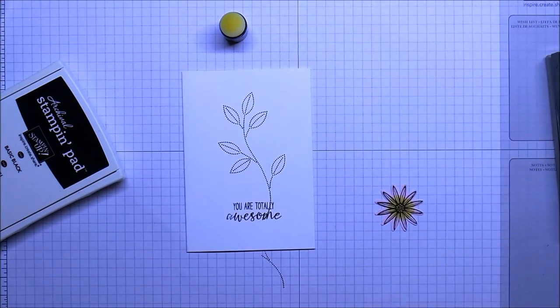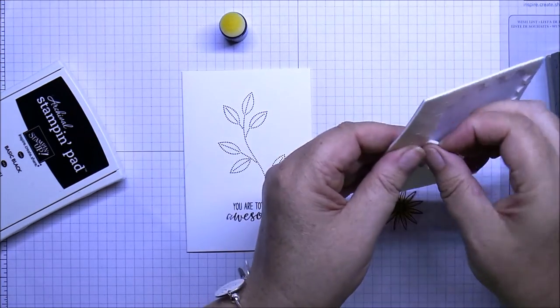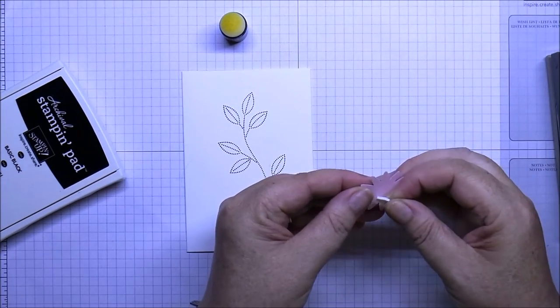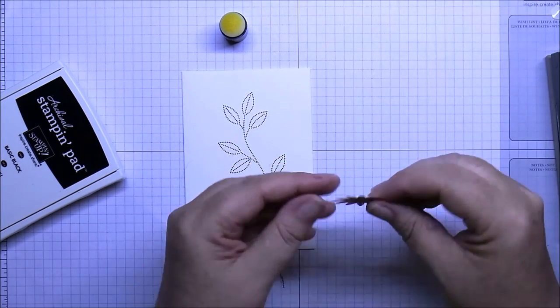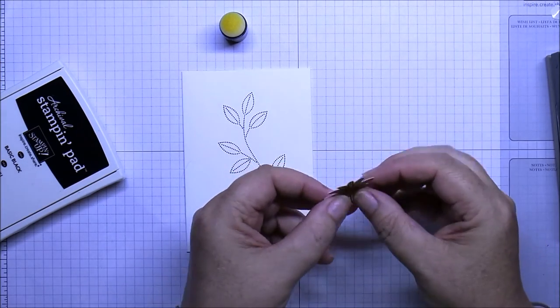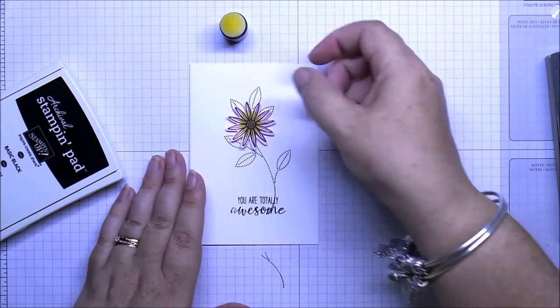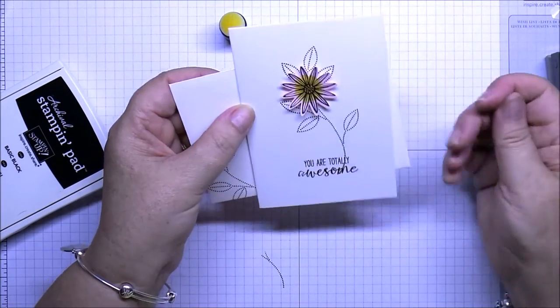Okay, and then all we need now is just a little dimensional, pop that on the back of your flower, your petals, a little bit of a pearl, and just pop that on there. And there's your card done and there's your envelope and it's ready to go in the post.